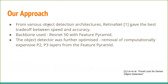We tested various variants of different object detection architectures such as Faster RCNN and RetinaNet, and found the latter to give the best trade-off between speed and accuracy. The backbone used is a ResNet-50 with a feature pyramid. This object detector was further optimized by removing the computationally expensive P2 and P3 layers, giving a significant increase in speed with minimal loss in object detection accuracy.